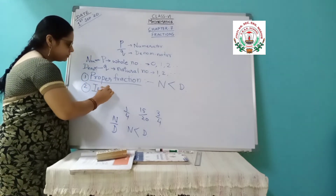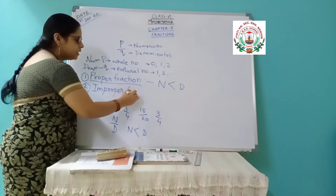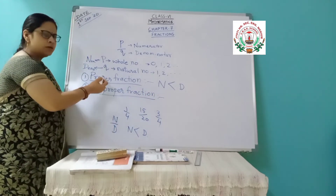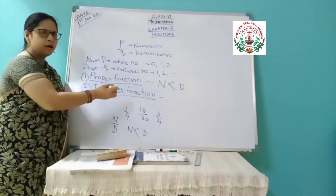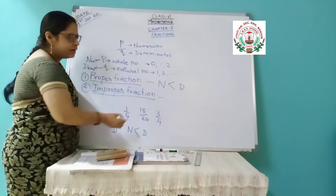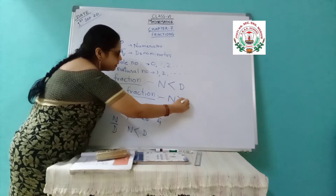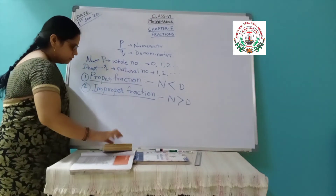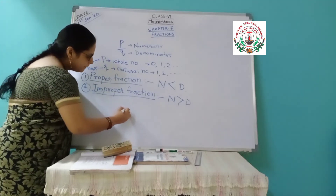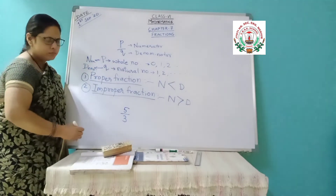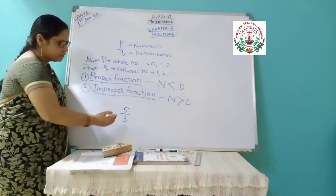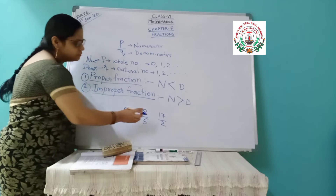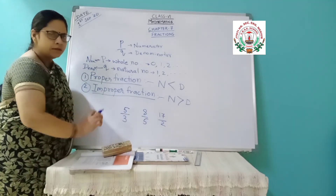This is the first type of fraction. The second is improper fraction. By the name itself it is clear that it will be the opposite of the proper fraction. In proper fraction the numerator is smaller and denominator is greater, so in improper the opposite — numerator will be greater than the denominator. Like suppose 5 divided by 3, or 8 by 5, or 17 by 2, something like that where the numerator is greater than the denominator.